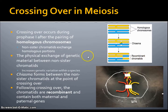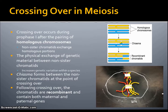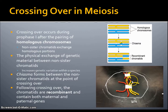We can see here in our cell that these large chromosomes have already crossed over some genes from the maternal side to the paternal side. The large red chromosome has some genes from the paternal side, and the large yellow, which is the paternal, contains some from the maternal side.